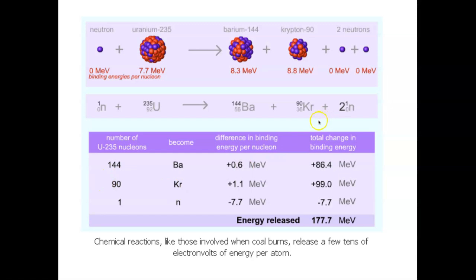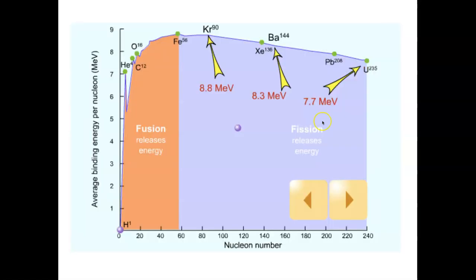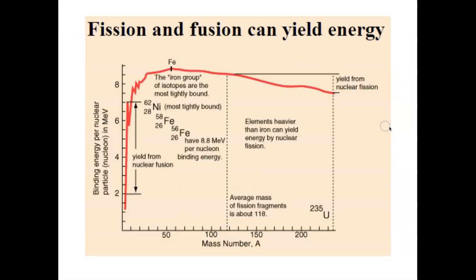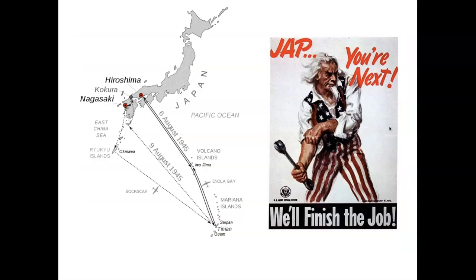Now let's finish with some history. The dropping of the atomic bomb — the fission bomb — was the first ever nuclear device deployed. The United States was the first to test and deploy one, and unfortunately the only nation to use a nuclear device on civilians in wartime. The Enola Gay on August 6th, 1945 dropped 'Little Boy' on Hiroshima, and three days later on August 9th another bomb was dropped.